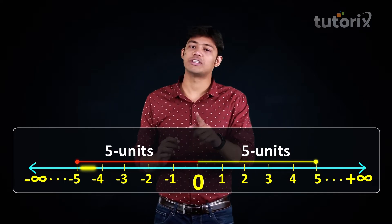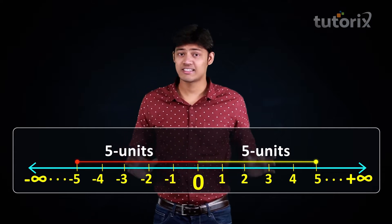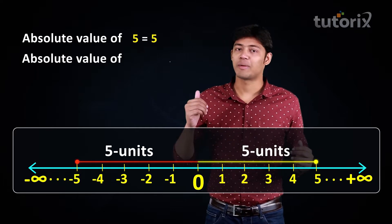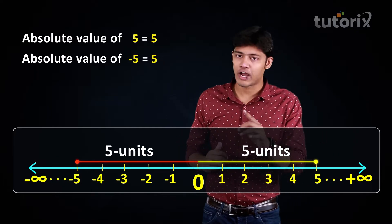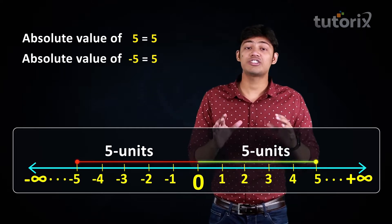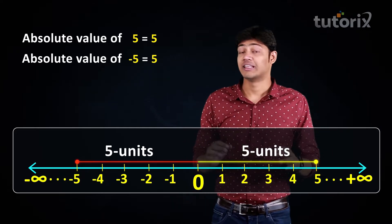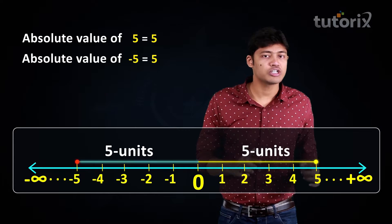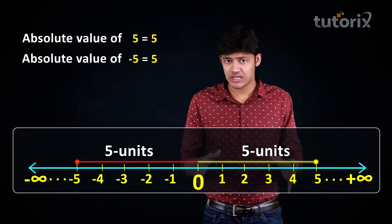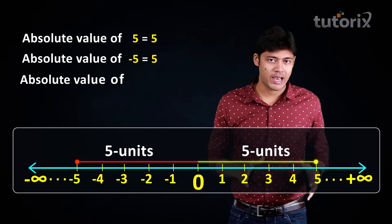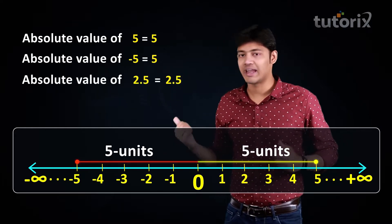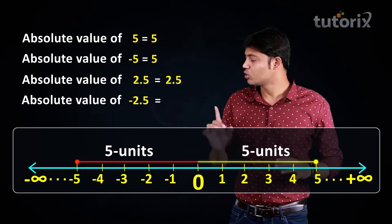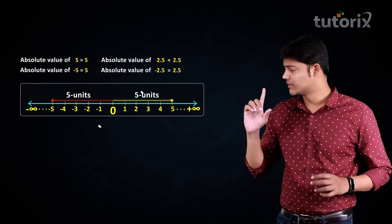The important point to note is: although we reached two different points, five and minus five, the distance we traveled from the origin is the same — five units. This distance of five units is known as the absolute value of both five and minus five. So the absolute value of two point five is two point five itself, and the absolute value of minus two point five is also two point five.